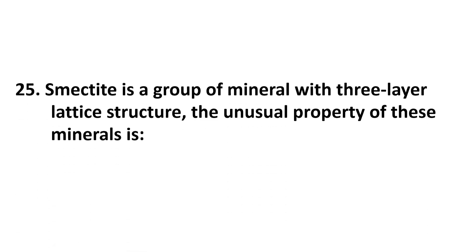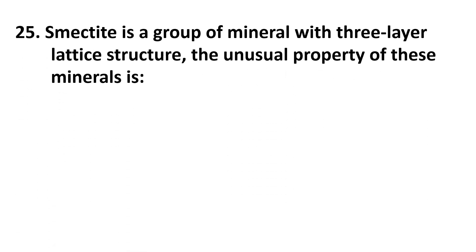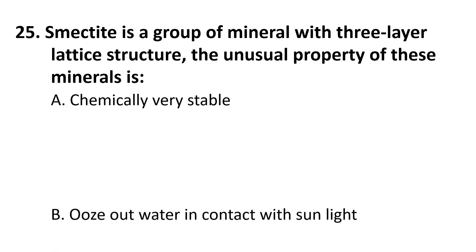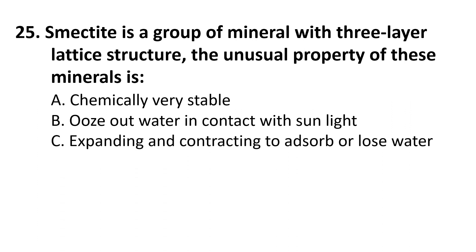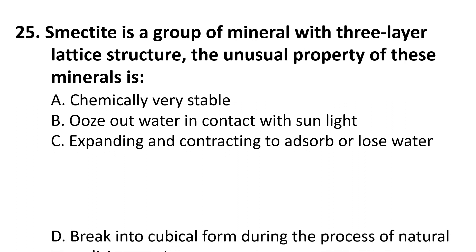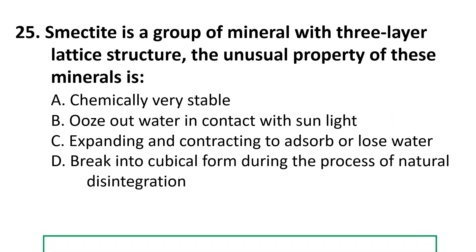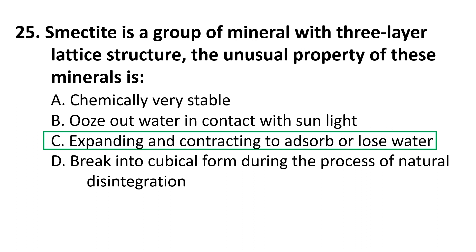Question 25: Smectite is a group of minerals with a three-layer lattice structure. The unusual property of these minerals is: A) Chemically very stable, B) Ooze out water in contact with sunlight, C) Expanding and contracting to absorb or lose water, D) Break into cubical form during natural disintegration. The correct answer is C) Expanding and contracting to absorb or lose water. Smectite group minerals have a cation and anion exchange property, giving them the ability to expand and contract to absorb or lose water.